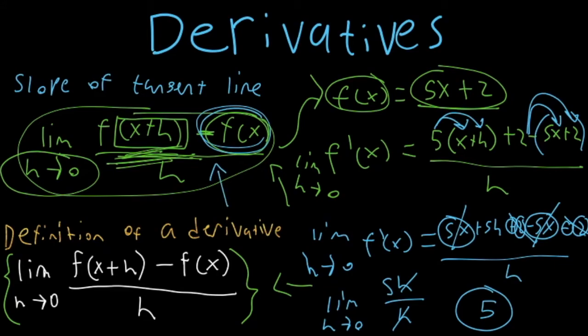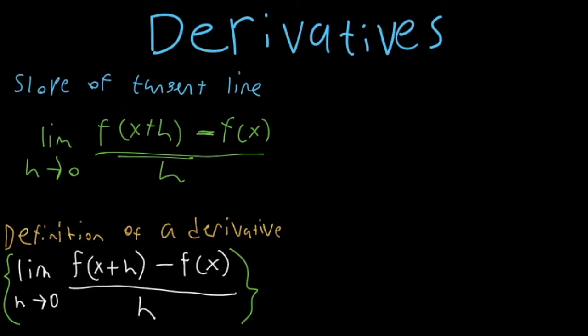So this equation up here works every single time. Every single time you have any kind of derivative that you have to take, this equation will work. But why don't we use this equation past calculus 1 if it works every single time?